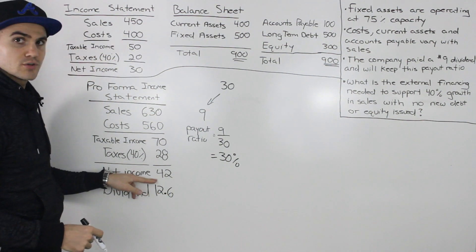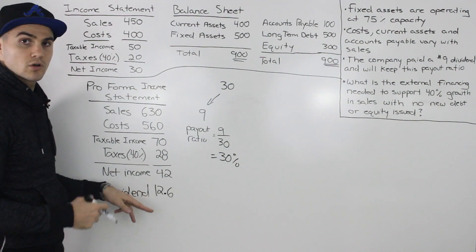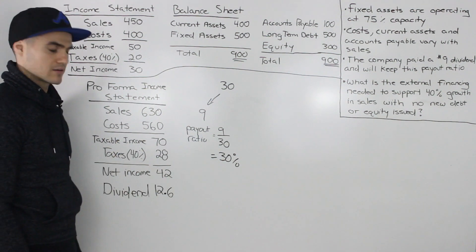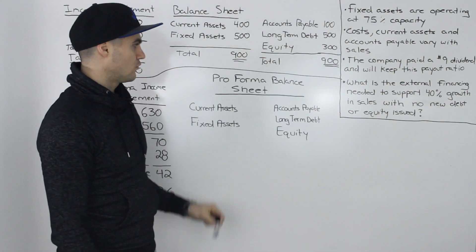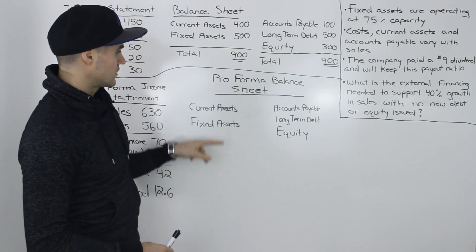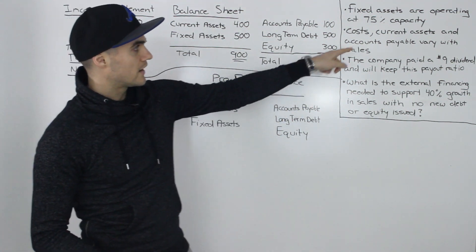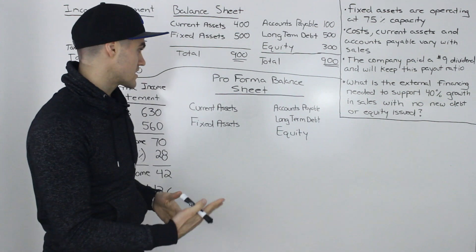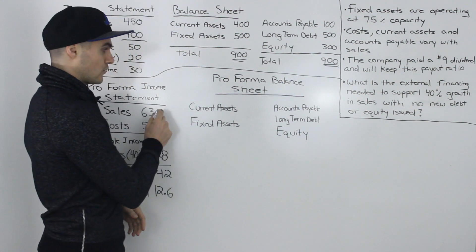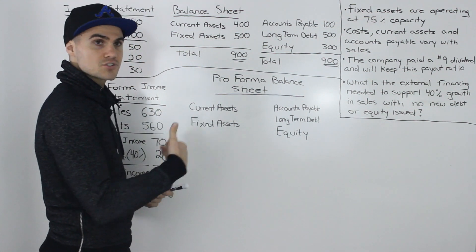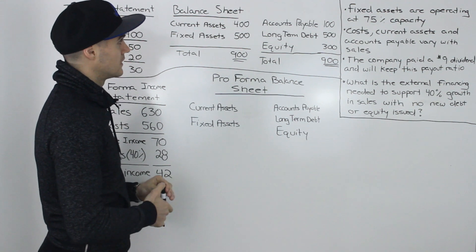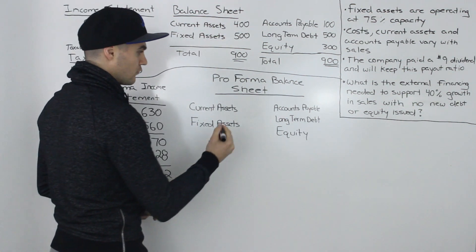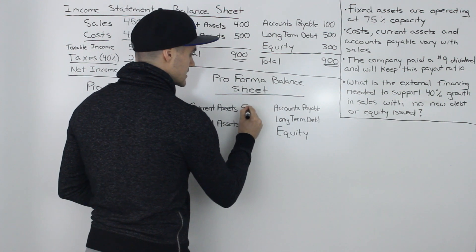So on a net income of $42, 12.6 will be paid out as a dividend. And now we can get into making the pro forma balance sheet. So let's start off with current assets. We're told that current assets vary with sales. And since we're growing sales by 40%, we know the current assets are going to grow by 40% as well. So 400 times 1.4 would give us 560.